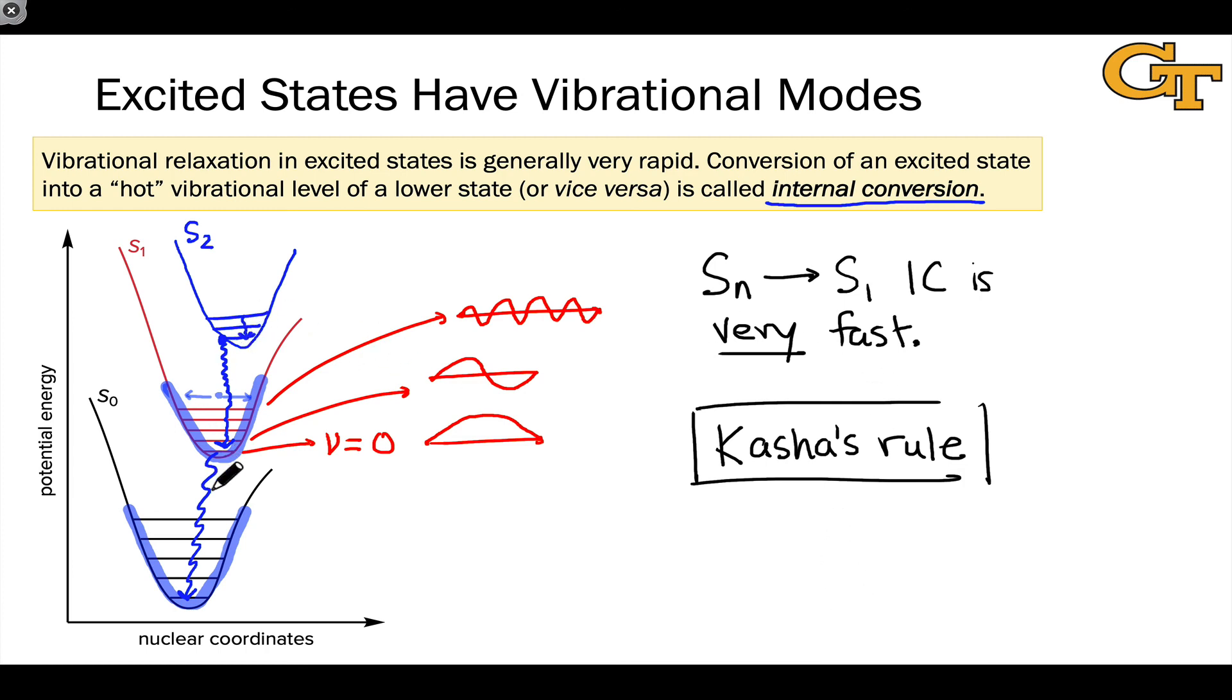It's all about non-radiative transitions and vibrational relaxation. Internal conversion is rapid and vibrational relaxation is very rapid. And both of these combine to convert higher level singlet or higher level triplet states back to S1 and T1.